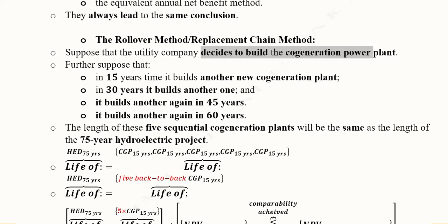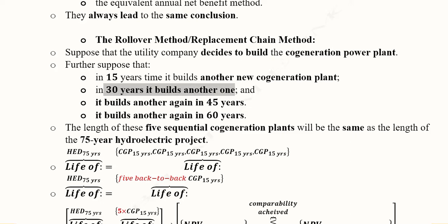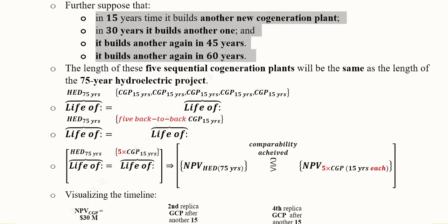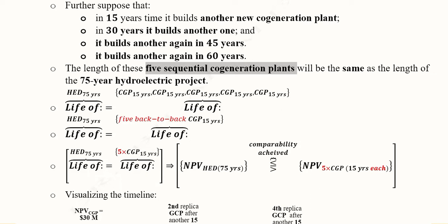We conduct the same co-generation plant project again for the next 15 years, then another 15 years making it 30, then another making it 45, and another making it 60. These four replicas of the original project give us 60 years, and when added to the original 15 years of the co-generation plant it becomes 75 years total. Thus five sequential co-generation plants equal the length of the 75-year hydroelectric project.